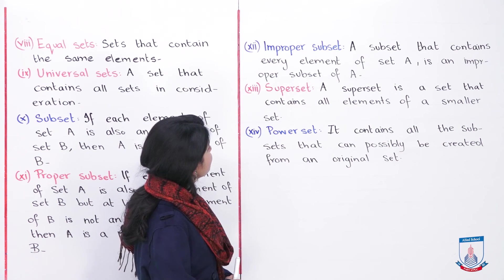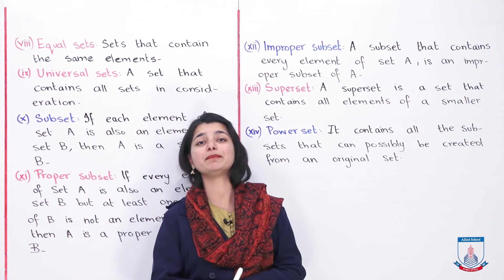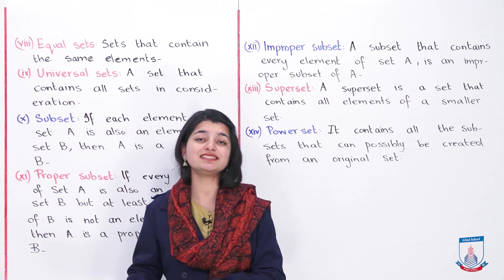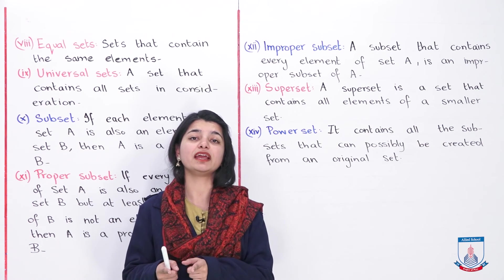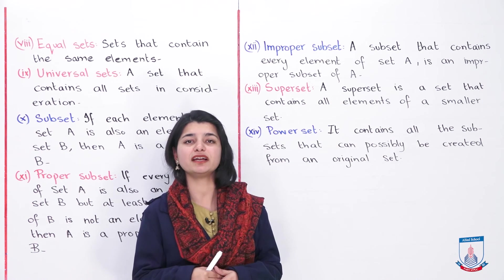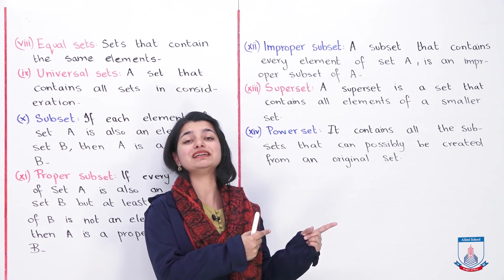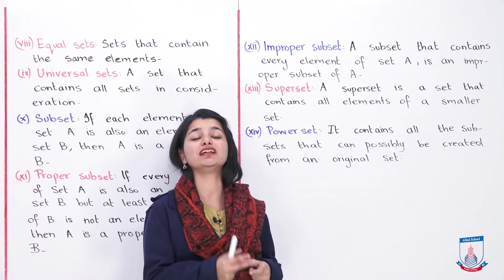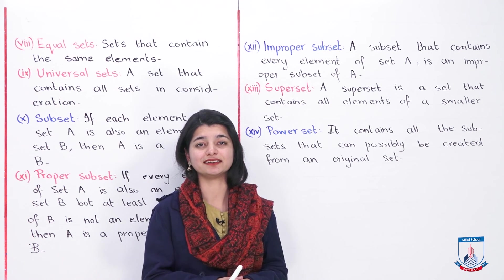After that, a super set is a set that contains all elements of a smaller set. The parent set, which is the original set, is called a super set. So if A is a subset, then B is a super set — because A's elements come from B, and B contains all of those elements. That is why B is called a super set.